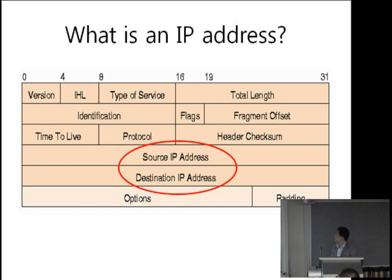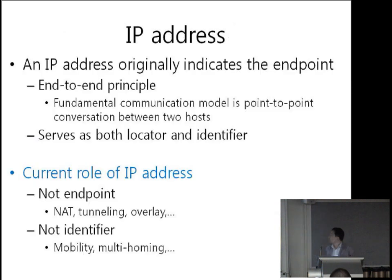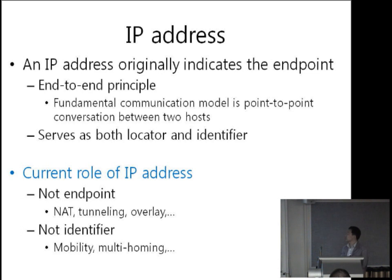Let me talk about the IP address first. Does the source IP address indicate the original host that generates this packet? Not in general. The same thing happens with the destination address. Originally, 20 to 30 years ago, an IP address indicated the endpoint — the original source and final destination. That's the so-called end-to-end principle. IP address serves as both a locator, so we can relay the packet to the destination, and also as an identifier, so two hosts can identify which connection a packet belongs to.